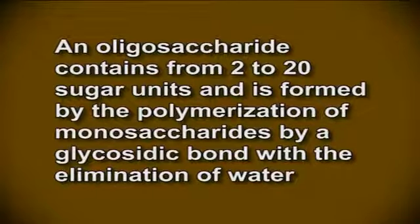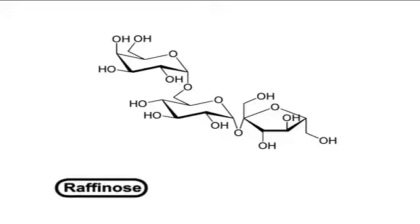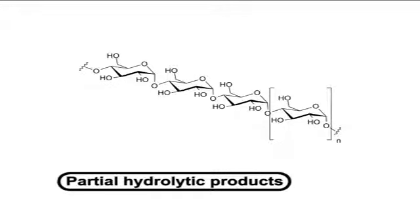Now let's move on to the next topic, oligosaccharides. An oligosaccharide contains from 2 to 20 sugar units and is formed by the polymerization of monosaccharides by a glycosidic bond with the elimination of water. Depending on the number of monosaccharides, they are classified as di-, tri-, tetrasaccharides, etc. Reducing oligosaccharides are formed when the anomeric hydroxyl group is linked to the alcoholic hydroxyl group of another monosaccharide, whereas non-reducing oligosaccharides are formed between anomeric hydroxyl groups of different monosaccharides. Commonly found oligosaccharides in foods include sucrose, maltose, lactose, raffinose, and stachyose.